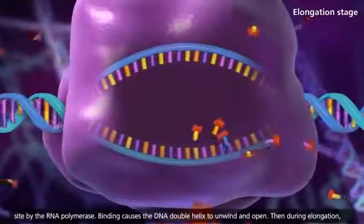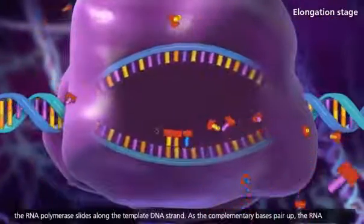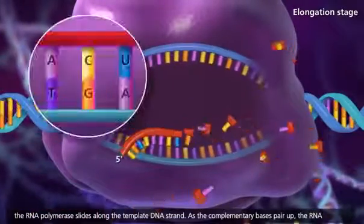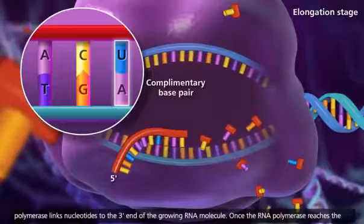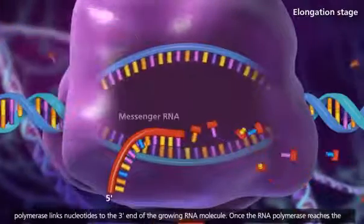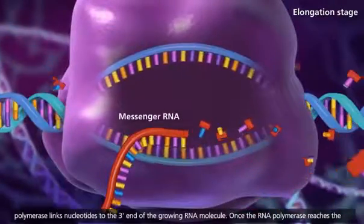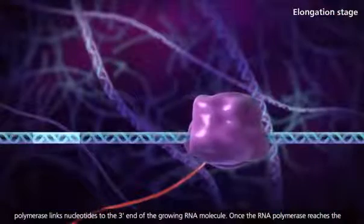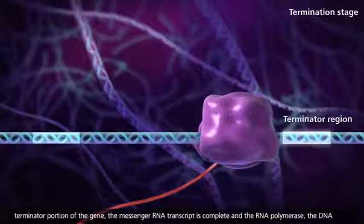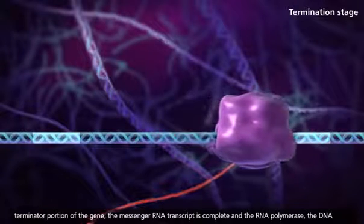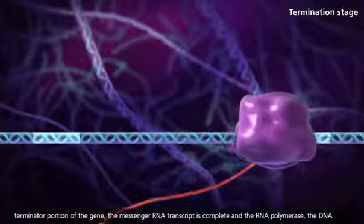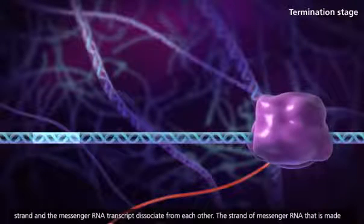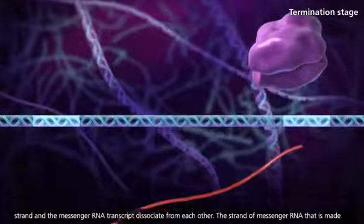Then during elongation, the RNA polymerase slides along the template DNA strand. As the complementary bases pair up, the RNA polymerase links nucleotides to the three-prime end of the growing RNA molecule. Once the RNA polymerase reaches the terminator portion of the gene, the messenger RNA transcript is complete, and the RNA polymerase, the DNA strand, and the messenger RNA transcript dissociate from each other.